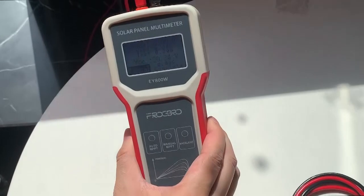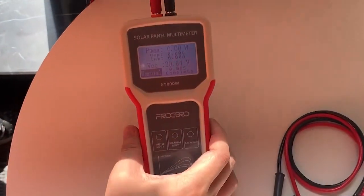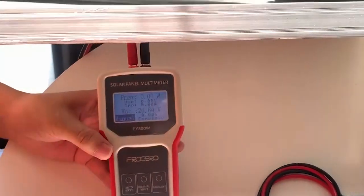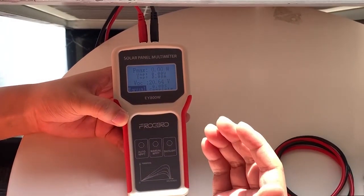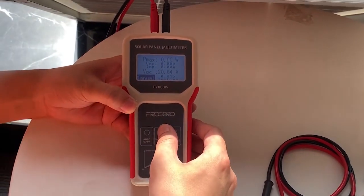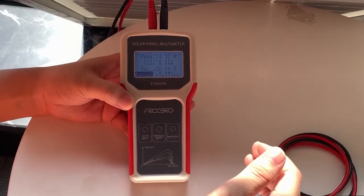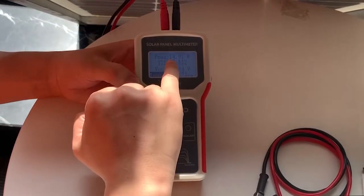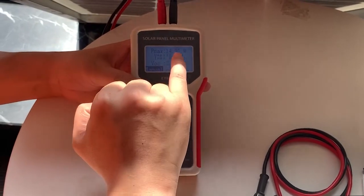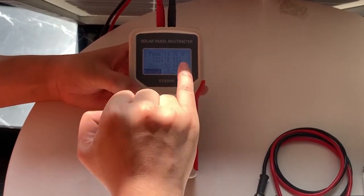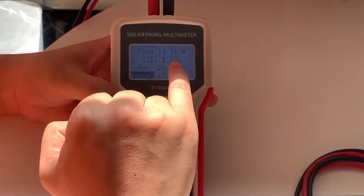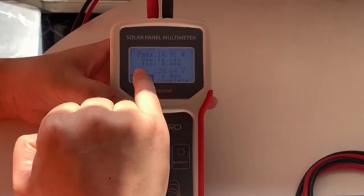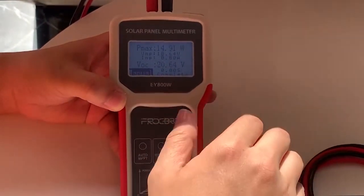Let's adjust the direction of the solar panel. Okay, let's press the menu button. Okay, now you can see the power is 14.9 watts, the voltage is 18.64 volts, the current is 0.8 amp.